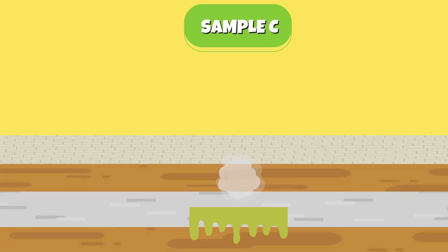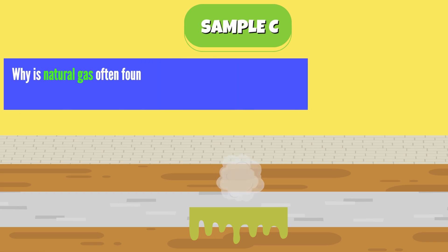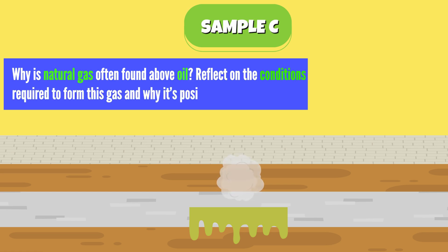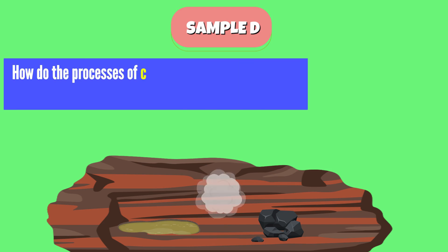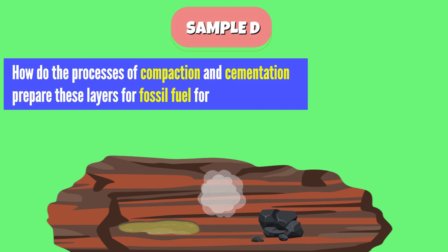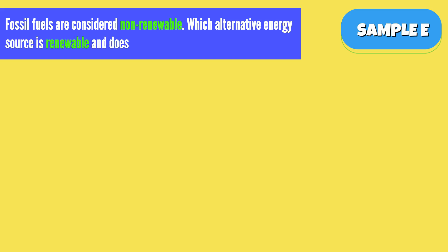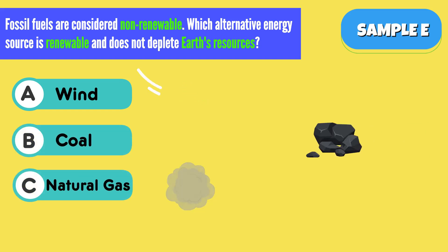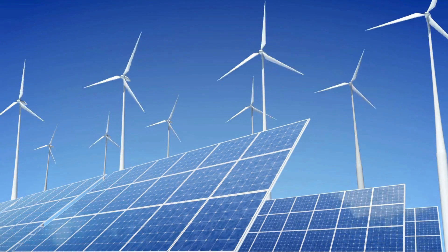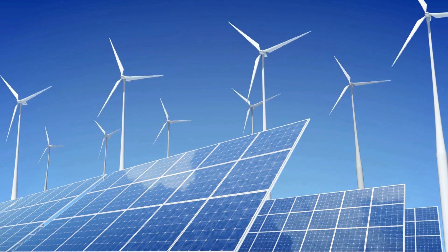Sample C: a colorless, odorless gas trapped above an oil deposit. Guiding question — why is natural gas often found above oil? Reflect on the conditions required to form this gas and why it's positioned this way. Sample D: layers of sediment with visible organic material mixed within. Guiding question — how do the processes of compaction and cementation prepare these layers for fossil fuel formation? Sample E: fossil fuels are considered non-renewable. Which alternative energy source is renewable and does not deplete Earth's resources? A. Wind. B. Coal. C. Natural gas. D. Oil. Guiding question — reflect on energy sources that are abundant and do not rely on the Earth's finite resources.